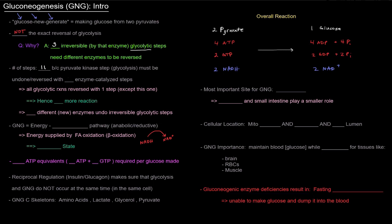All the glycolytic reactions are reversed with one step except this one, the one that's catalyzed by pyruvate kinase. Because this one is reversed in two separate steps, there's one more reaction, so hence the 11 total. That means there's four different or new enzymes that undo the irreversible glycolytic steps. These are four new enzymes or different enzymes in gluconeogenesis.